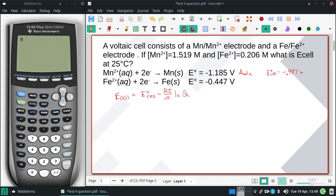E° for the cell would be -0.447, flip the sign, plus 1.185 volts, giving E° = 0.738 V.